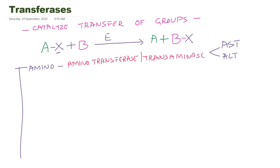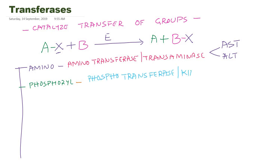Another group that Transferases can transfer is the phosphoryl or phosphate group. Such enzymes are known as phosphotransferases, or more commonly called kinases. Examples include hexokinase, glucokinase, pyruvate kinase, and galactokinase — there are many kinase enzymes present that usually transfer the phosphoryl group.